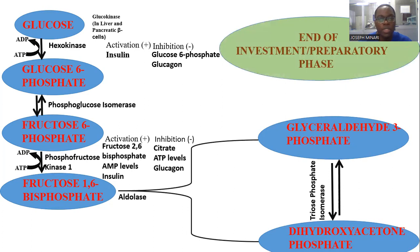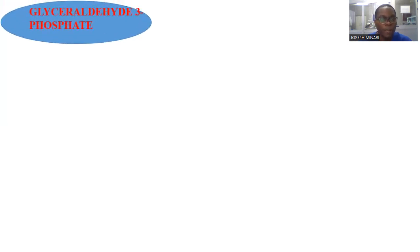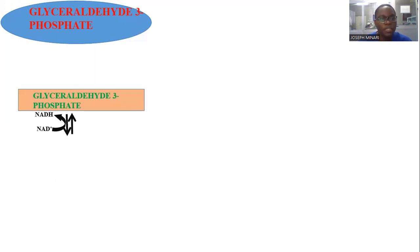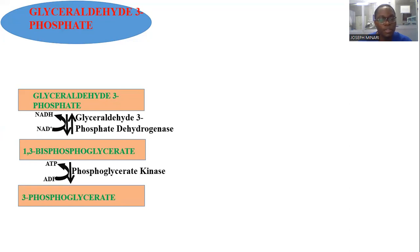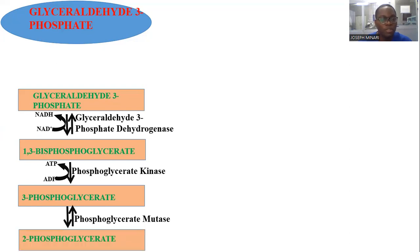Now we move to the payoff phase of glycolysis. Glyceraldehyde-3-phosphate, in the presence of NAD+ and glyceraldehyde-3-phosphate dehydrogenase, is converted to 1,3-bisphosphoglycerate. Then 1,3-bisphosphoglycerate produces two molecules of ATP and, in the presence of phosphoglycerate kinase, is converted to 3-phosphoglycerate. Then 3-phosphoglycerate, in the presence of phosphoglycerate mutase, is converted to 2-phosphoglycerate.